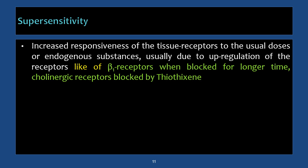Supersensitivity is the increased responsiveness of tissue receptors occurring even with usual therapeutic doses or endogenous substances. It is usually due to up-regulation — an increased number of receptors. In physiology you come across this with nerve injury, where there is an increased response to drugs due to an increased number of receptors at the denervated tissue.